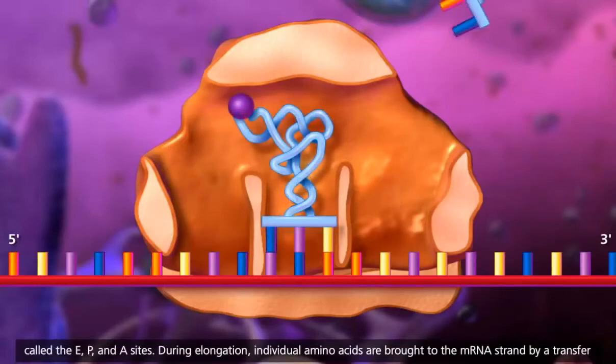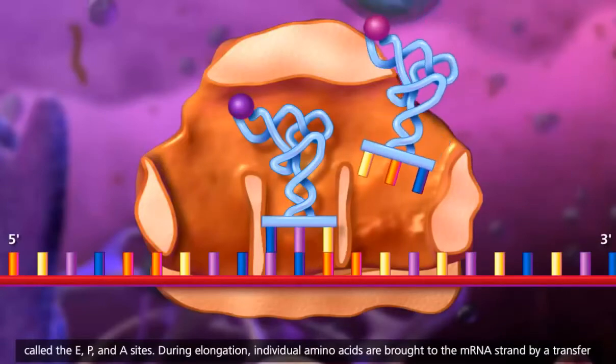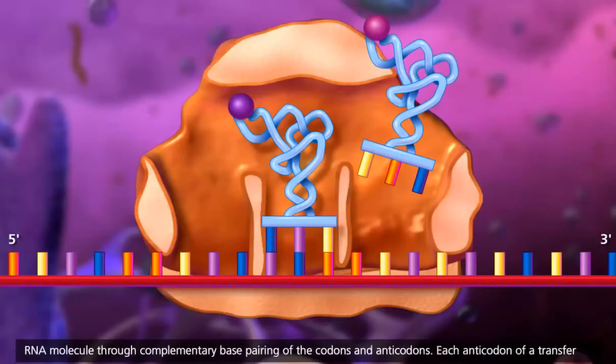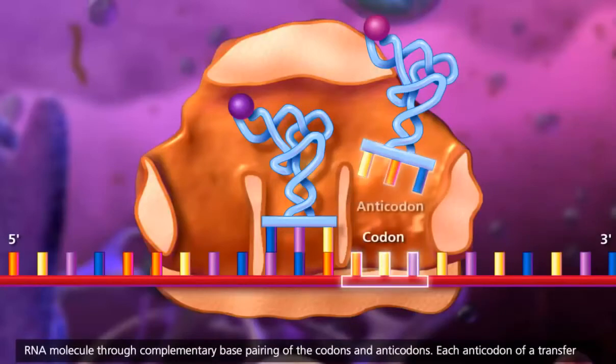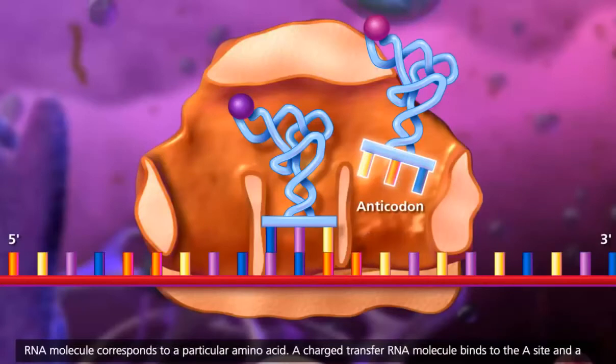During elongation, individual amino acids are brought to the messenger RNA strand by a transfer RNA molecule through complementary base pairing of the codons and anticodons. Each anticodon of a transfer RNA molecule corresponds to a particular amino acid.